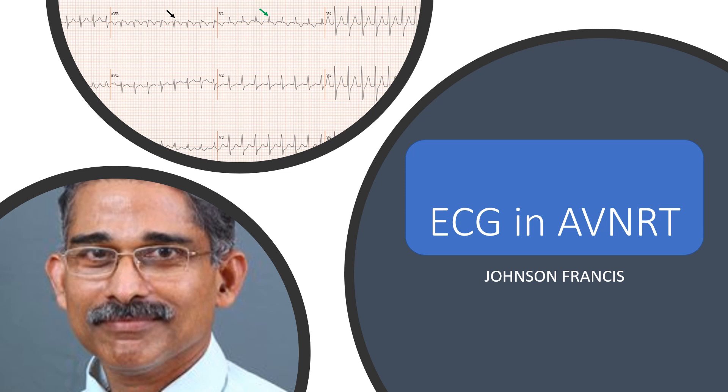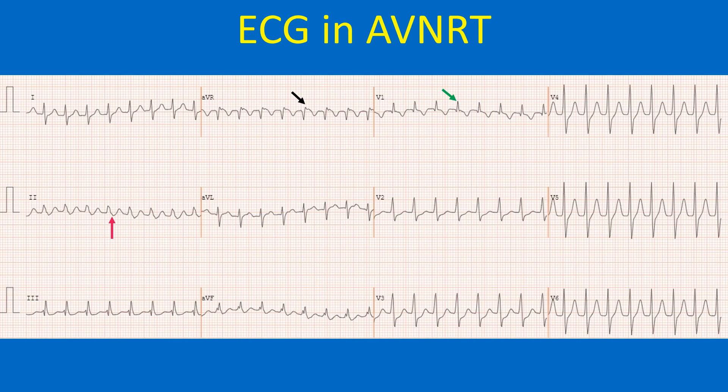This ECG shows a narrow QRS tachycardia at a rate of around 180 per minute. No P waves are seen to precede the QRS complexes, so it has to be taken as supraventricular tachycardia. Close scrutiny of the tracing shows probable negative P waves after the QRS complex in lead 2 (red arrow). These are called pseudo S waves, produced by retrograde P waves — a pattern seen in atrioventricular nodal reentrant tachycardia, or AVNRT.